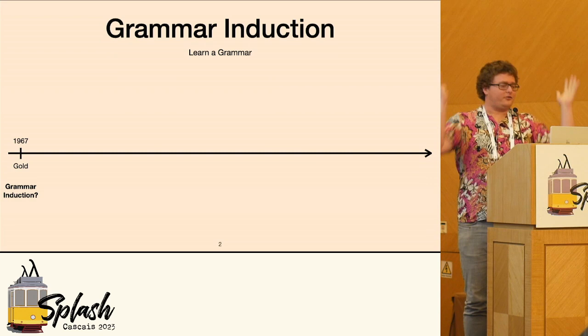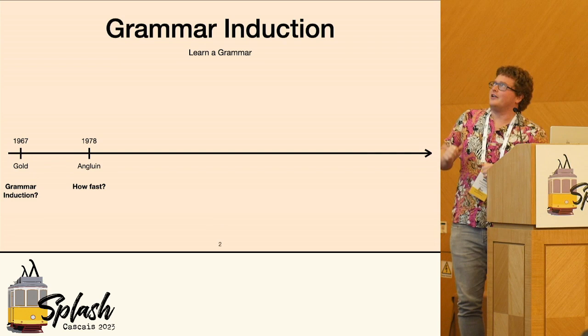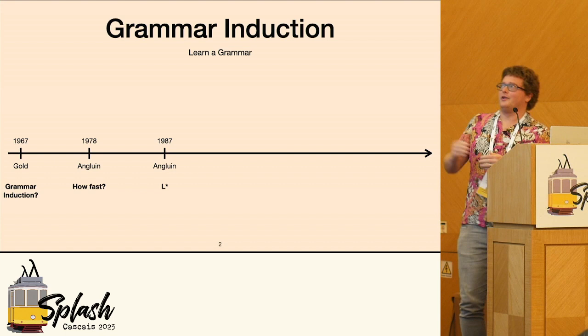And then some years later, Angluin, who's kind of the heavy hitter in grammar induction, started asking questions like how fast can we do this? And then came up with her famous L-star algorithm.